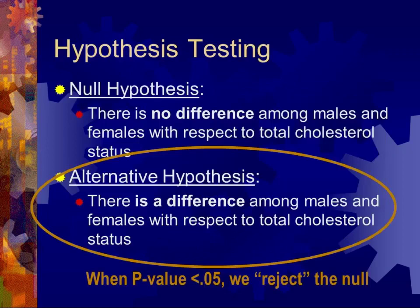With this particular finding, we go back to our hypothesis testing: because the groupings of the categorical variables showed a p-value of less than 0.05, we reject the null hypothesis and accept the alternative hypothesis. For some people this sounds backwards, but there is in fact a difference between males and females with respect to their total cholesterol status as looked at in categories of normal or high.